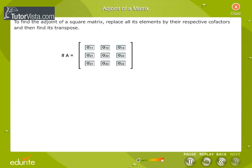if matrix A has elements A11, A12, A13, A21, A22, A23, A31, A32, A33, then replace each of the elements by its cofactors as shown.